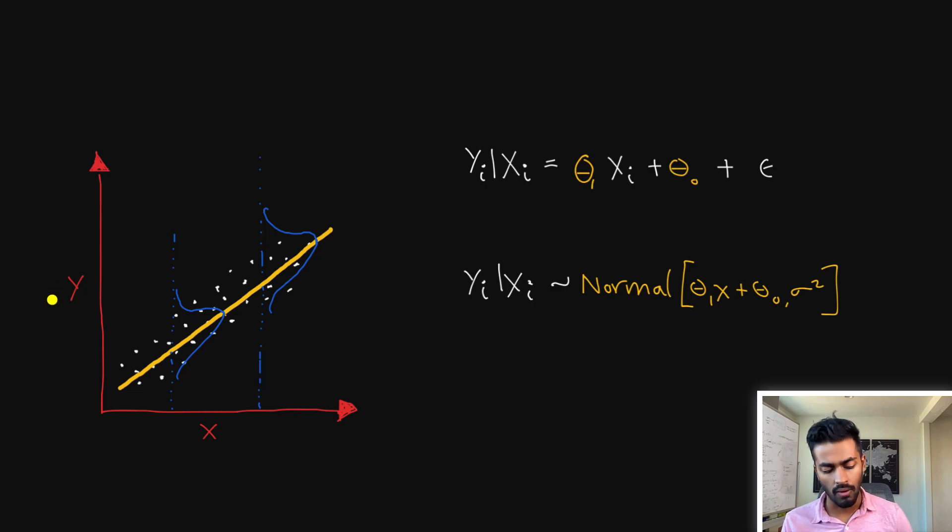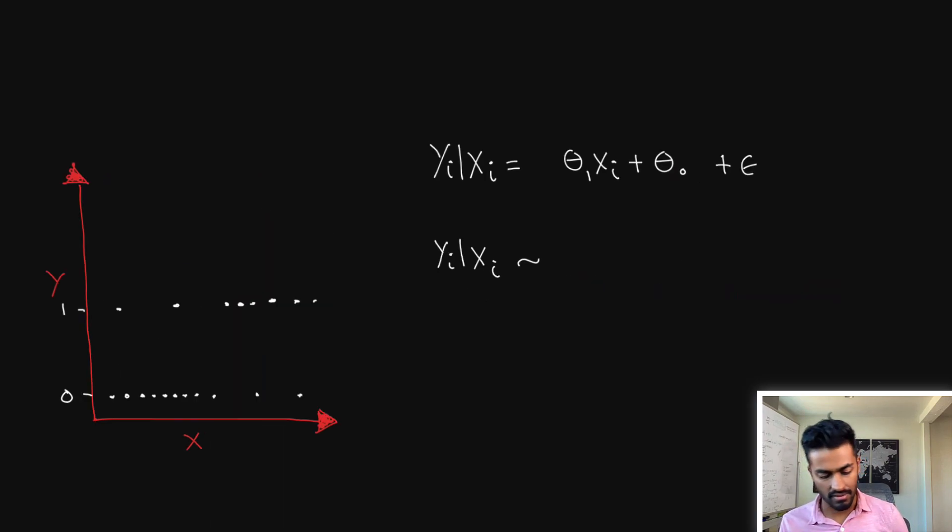But what if now the response variable y was not normally distributed for some given value of x? And what if they were, for example, let's say it looks like this, our data, where it's a binary classification, where y can only take on two values of zero and one. In this case, we can say that y is Bernoulli distributed. And the parameter for a Bernoulli distribution is just p, which is the probability that y is equal to one for a given value of x.